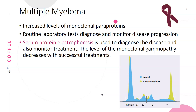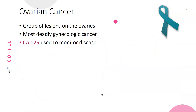Multiple myeloma: increased levels of monoclonal paraproteins are evident in multiple myeloma. Routine lab tests diagnose and monitor disease progression. We use serum protein electrophoresis to diagnose the disease and also to monitor treatments. The levels of the monoclonal gammopathy decrease with successful treatment. In the image, you see in blue a normal serum electrophoresis, and in multiple myeloma there is a peak in the gamma region representing the monoclonal gammopathy.